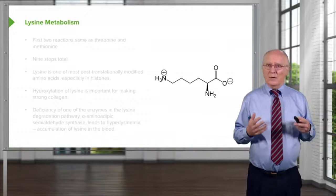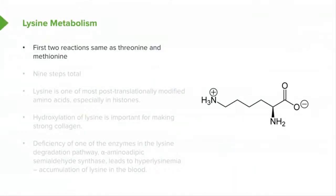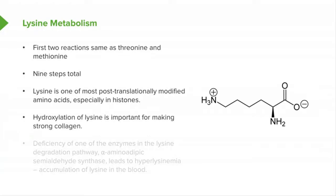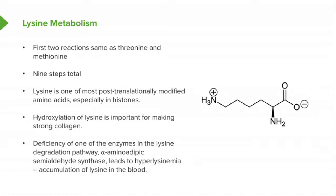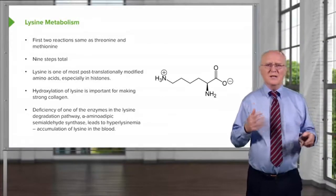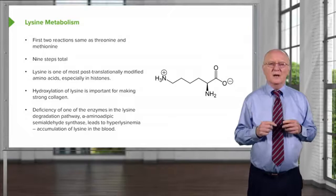Lysine is made in another set of very complicated reactions. The first two reactions are the same as in threonine and methionine metabolism. There are a total of nine steps, which I won't step through in detail here. Lysine is one of the most post-translationally modified amino acids, and we'll talk about that at the end of this set of lectures. The hydroxylation of lysine, as seen in another lecture, is important for making strong collagen. A deficiency of alpha-aminoadipic semialdehyde synthase leads to hyperlysinemia — accumulation of lysine in the blood — which has very severe consequences.